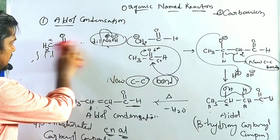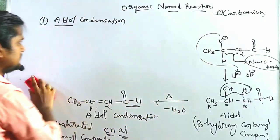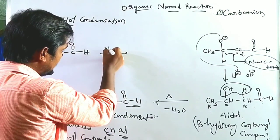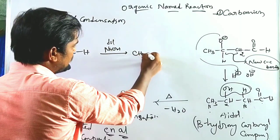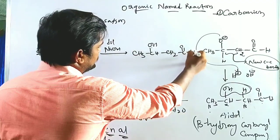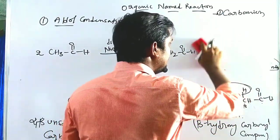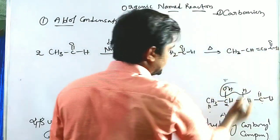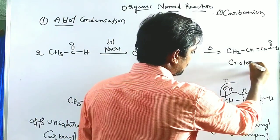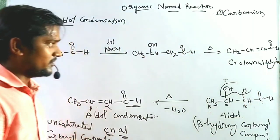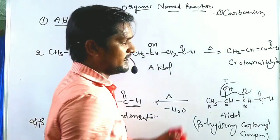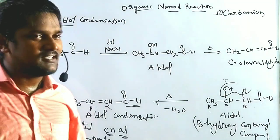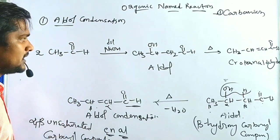The simplest representation of aldol condensation: two moles of CH3CHO treated with diluted NaOH give the beta-hydroxy carbonyl compound (aldol). On further heating, we get CH3–CH=CH–CHO, whose commercial name is crotonaldehyde. So the first step gives the aldol, and further heating gives the alpha,beta-unsaturated carbonyl compound — crotonaldehyde. This concludes the discussion on this organic named reaction.